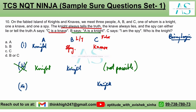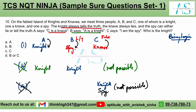In Case 3, C is the knight. C says 'I am the spy' — but the knight cannot be the spy; this is self-contradictory. So this case is also eliminated. With Cases 2 and 3 ruled out, the definite answer is: A is the knight, B is the spy, and C is the knave. A is the correct option.